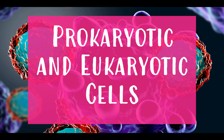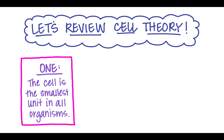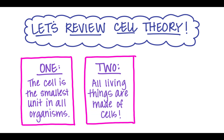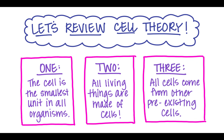Prokaryotic and eukaryotic cells. Let's review parts of the cell theory that you learned in seventh grade. The first part of cell theory says the cell is the smallest unit in all organisms. The second part says that all living things are made of cells. And the third part says that all cells come from other pre-existing cells.